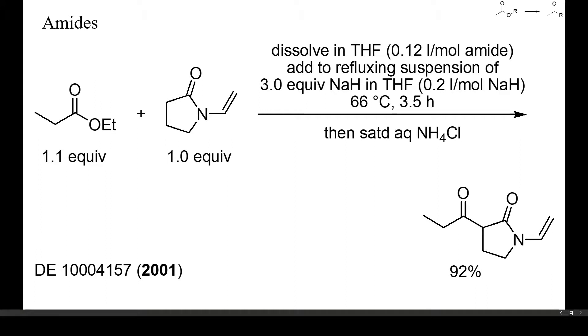In this example, N-vinyl pyrrolidone was condensed with ethyl propionate. The base was sodium hydride. Pyrrolidones are more acidic than non-cyclic amides, and their enolates apparently more reactive than ester enolates. Otherwise, this reaction would have yielded mainly the Claisen condensation product of the propionate.